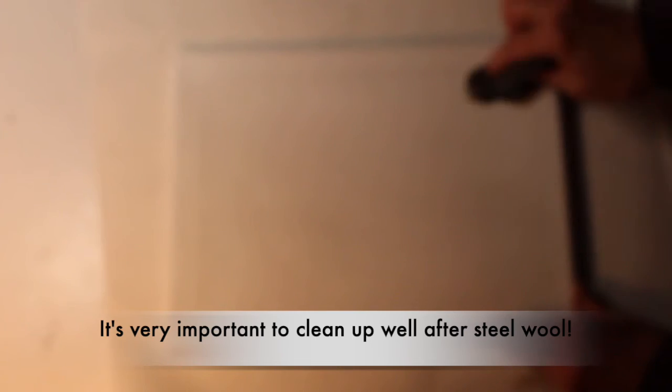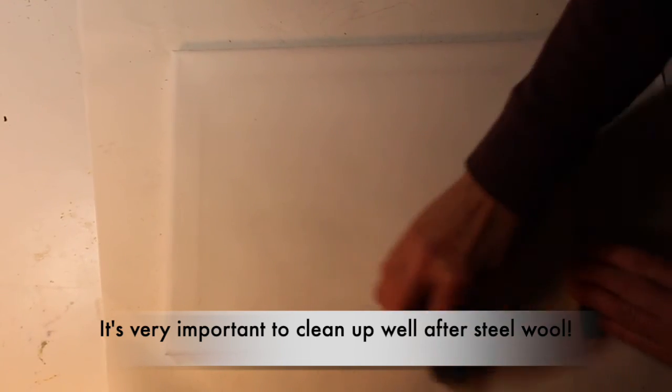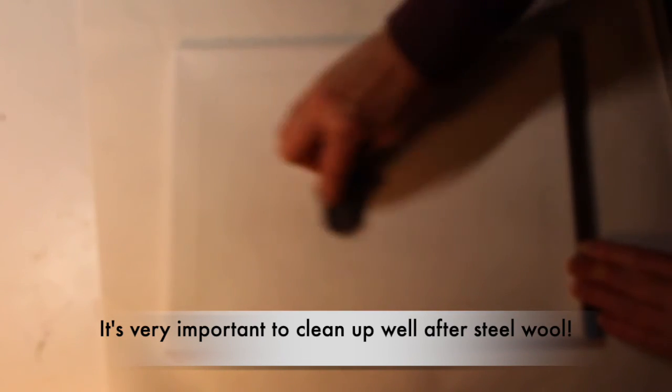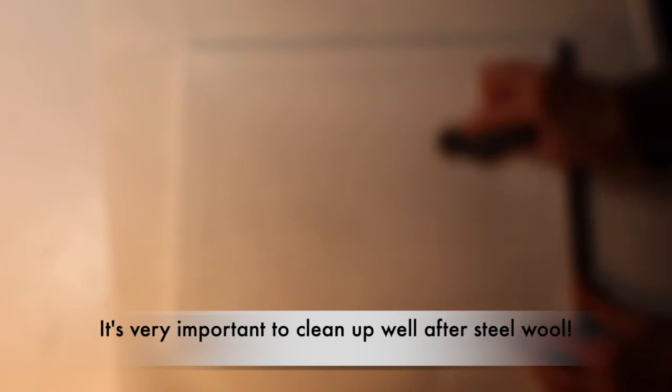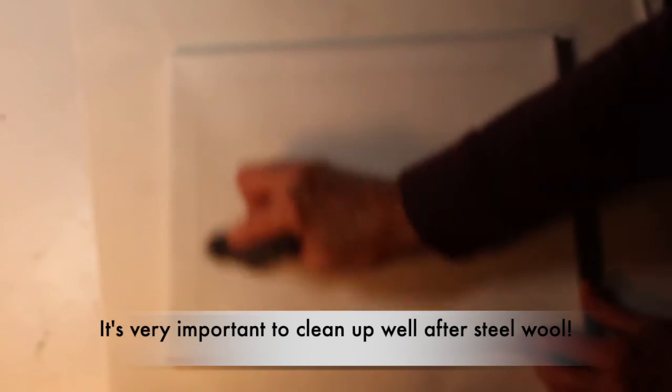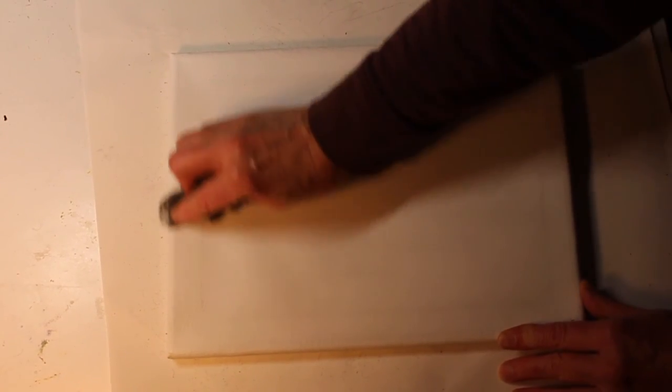Because you're using steel wool, cleanup is really important. You don't want to have any of the little pieces of metal left on your surface. A damp paper towel will be a good way to pick that up. And you also want to clean your painting surface if you're using the same surface that you plan to paint nearby. You want to make sure there is no metal left behind.